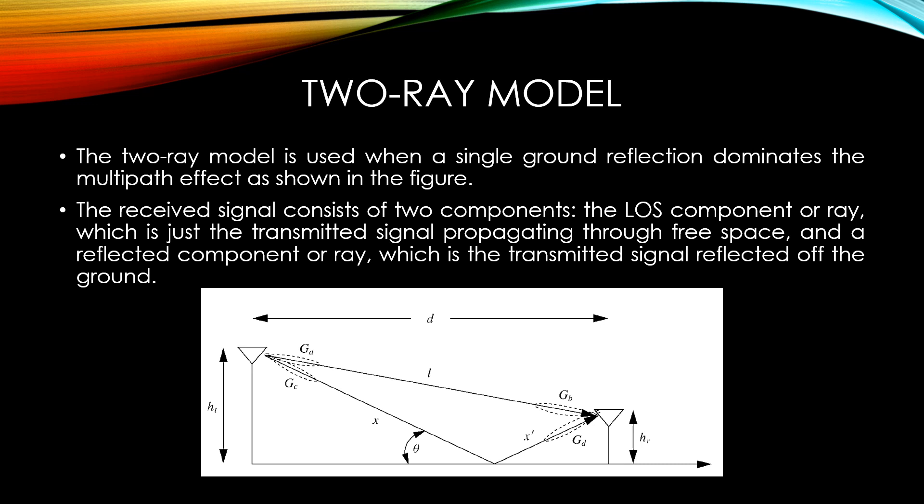The 2-ray model is used when a single ground reflection dominates the multipath effect as shown in the figure. The received signal consists of two components: the LOS component or ray, which is just the transmitted signal propagating through free space, and a reflected component or ray, which is the transmitted signal reflected off the ground.